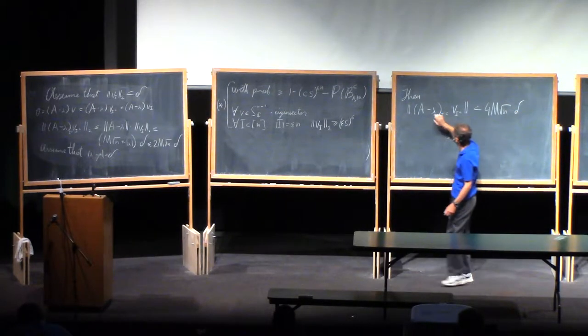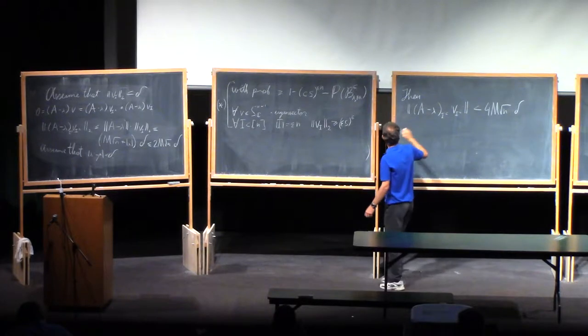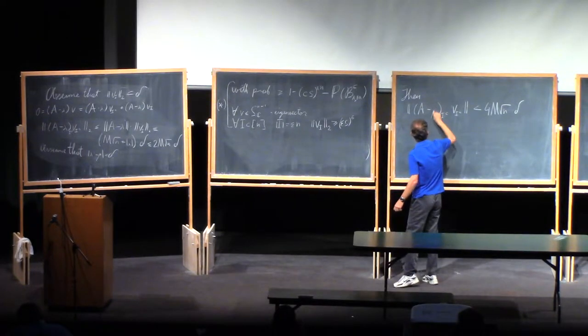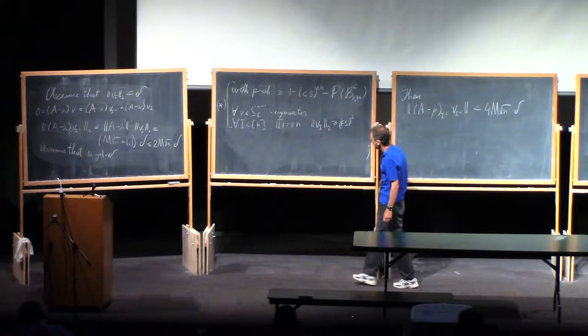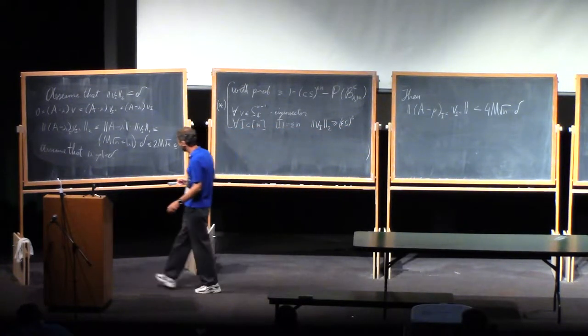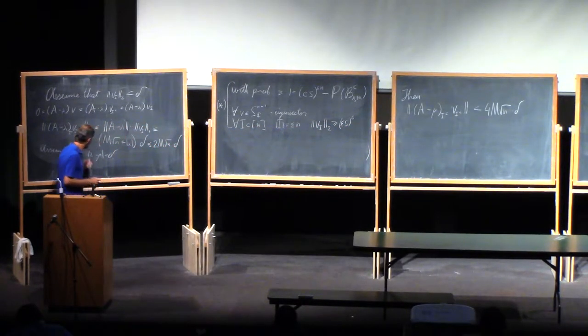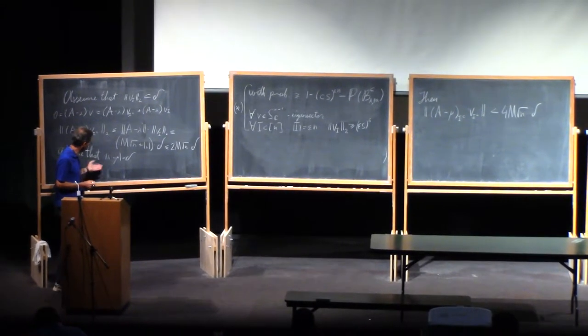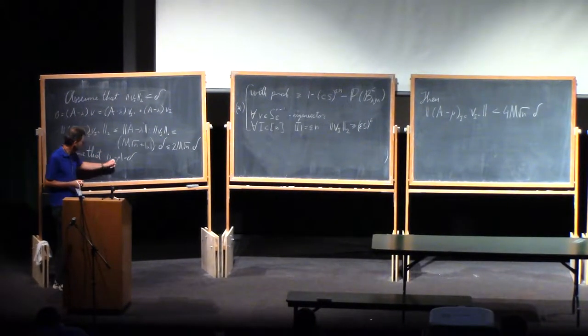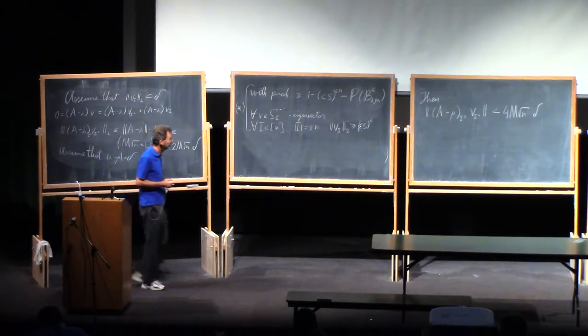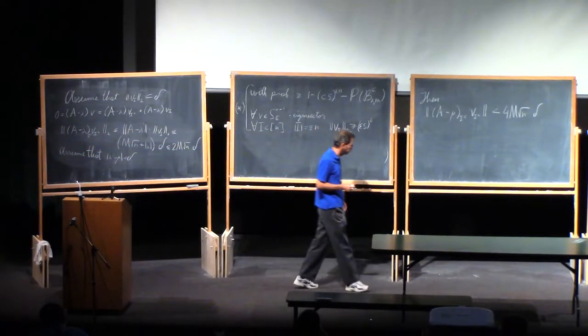And if it is delta small, I can also approximate this lambda by some deterministic parameter. So I assume that absolute value of lambda minus mu is less than delta. Mu now is deterministic. Of course, it's not completely deterministic. It should be close to lambda. Lambda is a random parameter. I don't know anything about its distribution.